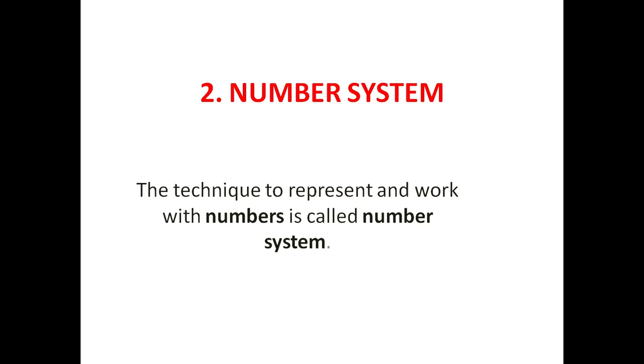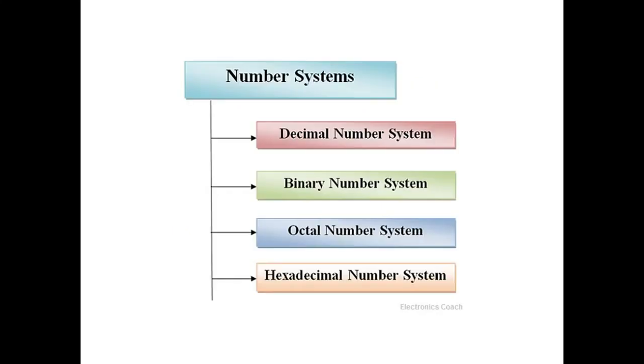Second topic is how many types of number systems. So, there are four types of number systems. First is decimal number system. Second is binary number system. Third is octal number system. And the last one is hexadecimal number system. We will discuss every number system one by one.